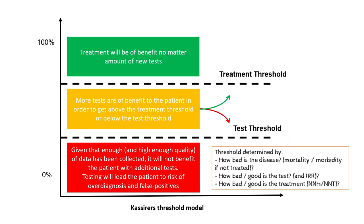One of the central models I've been alluding to is called Kassirer's threshold model. It has a test threshold and a treatment threshold. As we gather data, at some point we may cross the test threshold — at that point it's better for the patient to get a specific test to either rule out or rule in the condition. Below that point, the test would hurt them more than help — higher risk of overdiagnosis and false positives. If you're over the treatment threshold, you just treat directly.